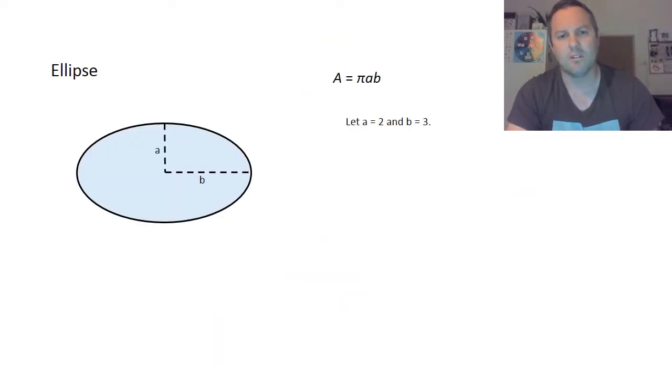Moving on. Here we have the ellipse. You guys might see it as an oval, could be an egg shape, but an oval is usually what we'd call it. Okay, again there's two things we need to know. We need to know our a and we need to know our b. So we've got a here and we've got b.